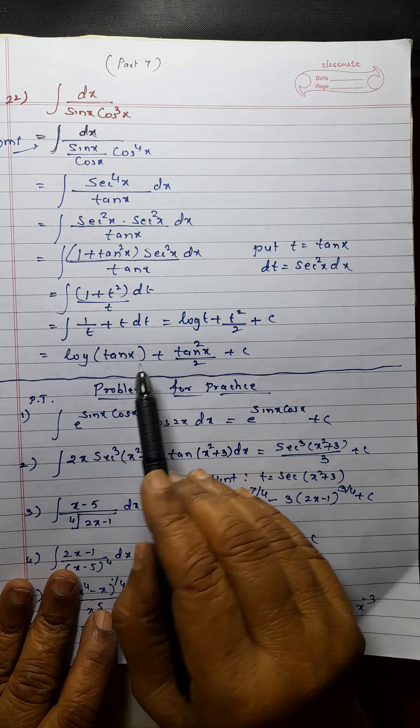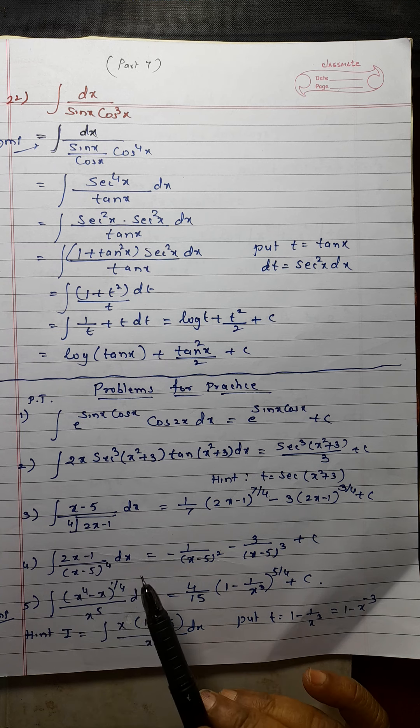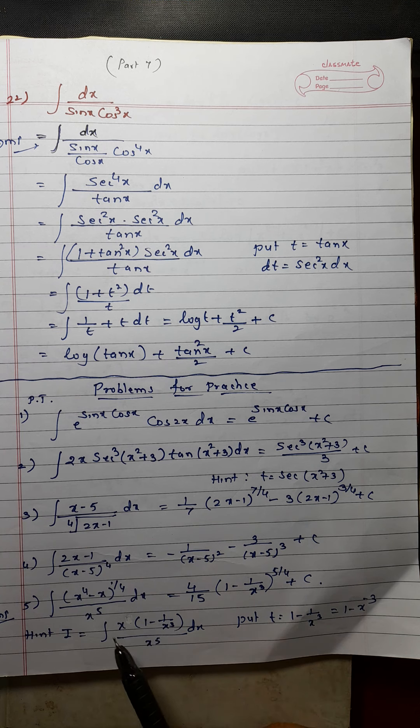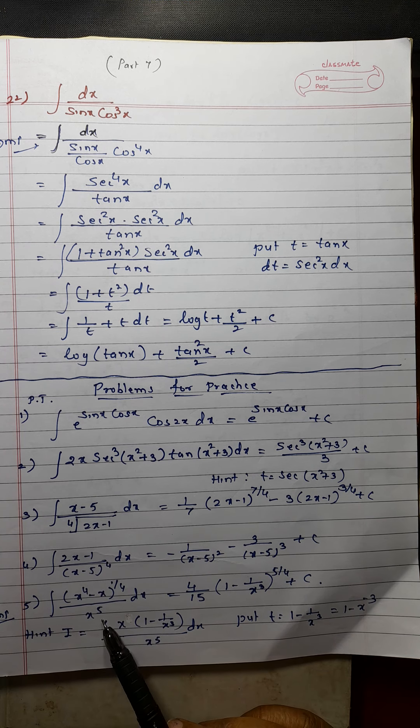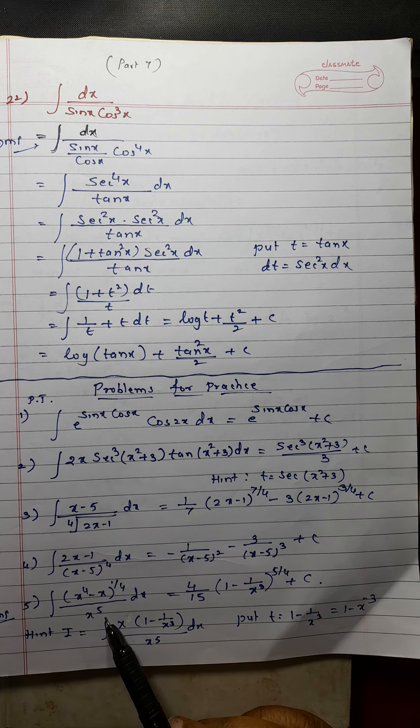For this problem, 2x minus 1 — substitute t. I have solved one problem of the same type. Then you find out x and substitute x here. This is an important problem, usually asked in the examination. I am giving you a hint.